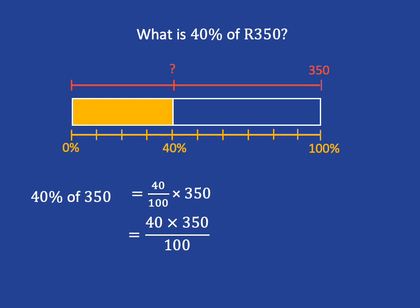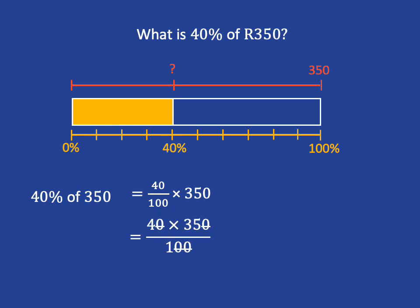We could just do the multiplication at this stage, but it's always easier if we do some simplifying first. We can divide the top and bottom by 10, and in fact we can divide by 10 again, so we just have 1 at the bottom and 4 times 35 at the top, giving us an answer of 140.